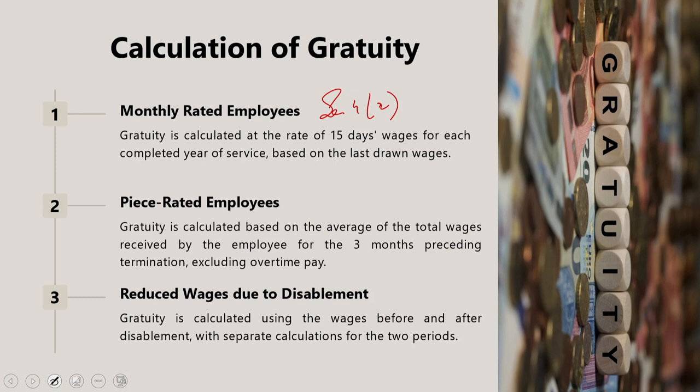Section 4(2) of the act provides the quantum of gratuity to be paid to the employee. For a monthly rated employee, for every completed year of service or part thereof in excess of six months, the employer shall pay gratuity at the rate of 15 days' wages based on the rate of wages last drawn by the employee. The specific formula for monthly rated employees is given in the act, and the relevance of 26 days will come into the picture here.